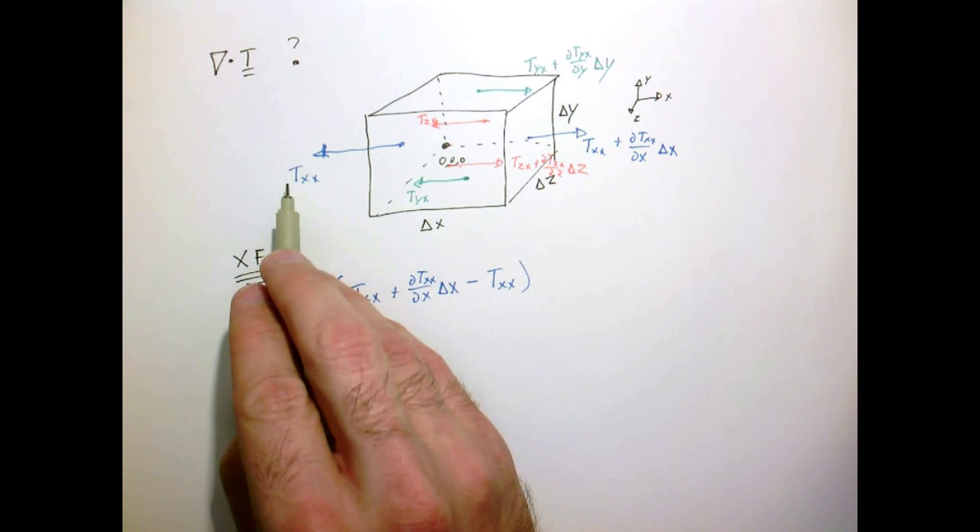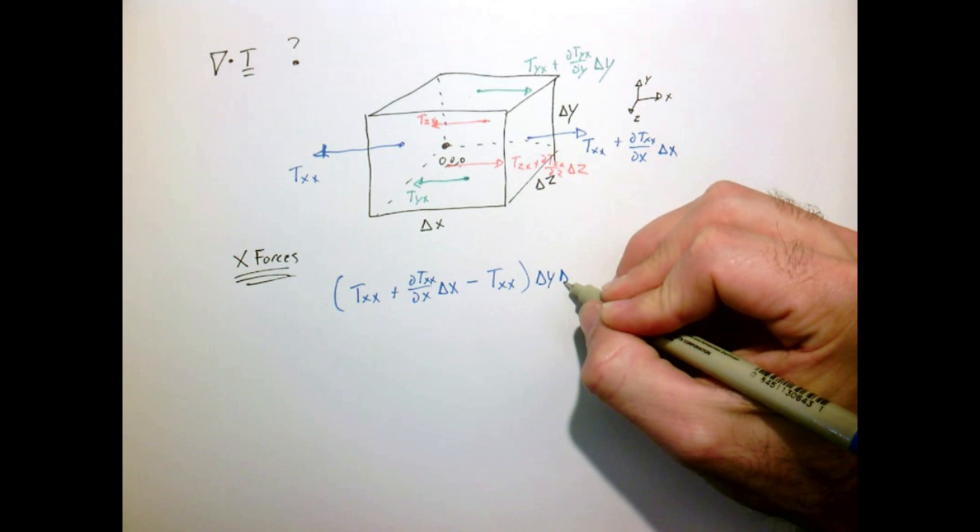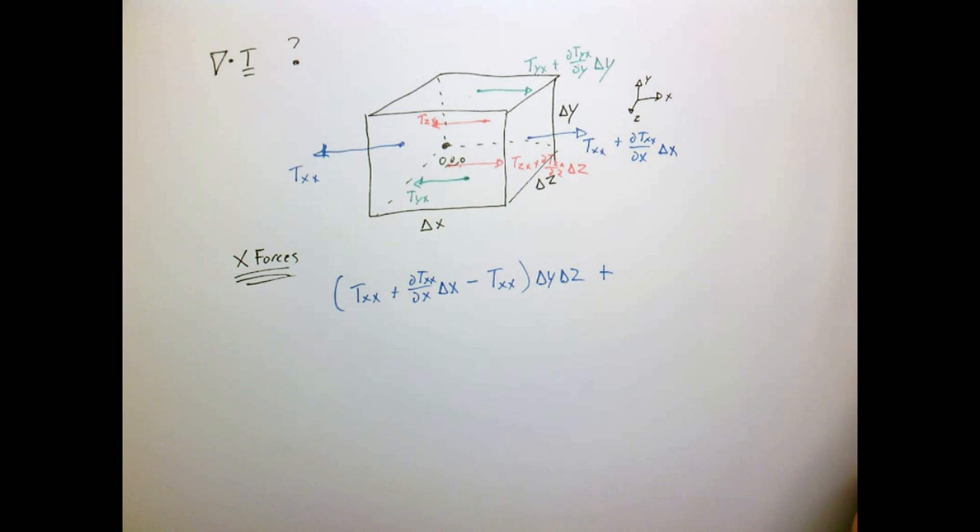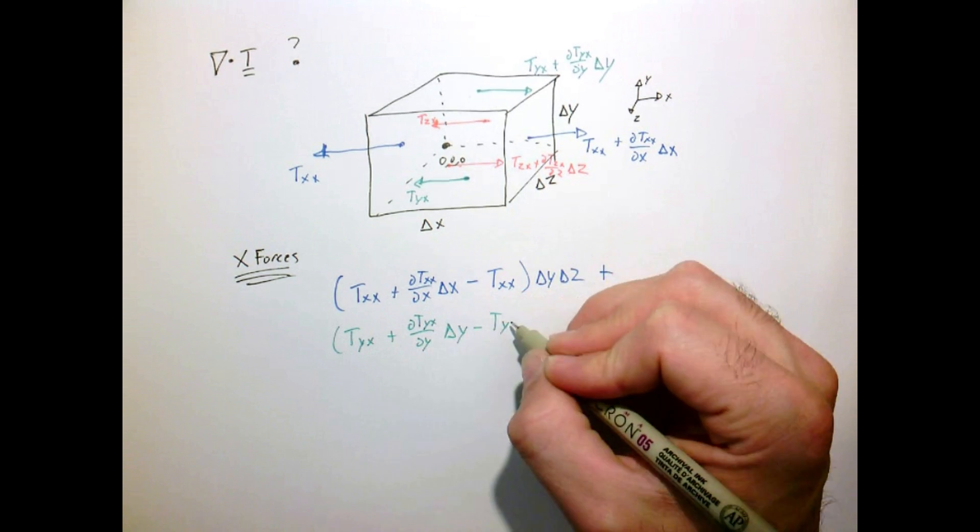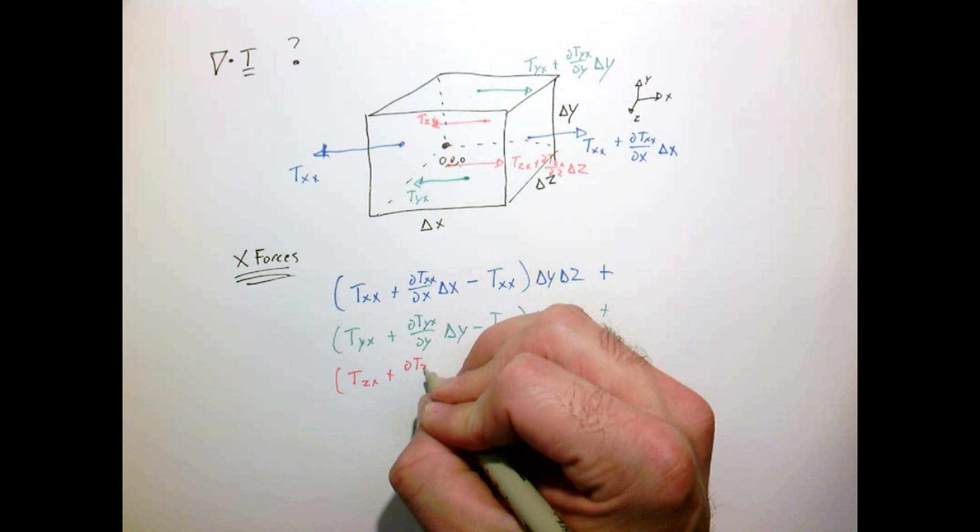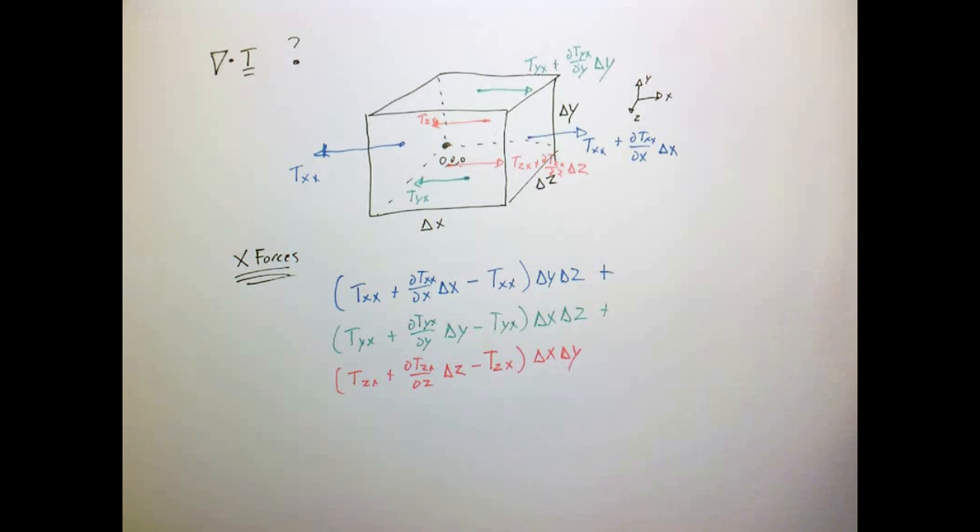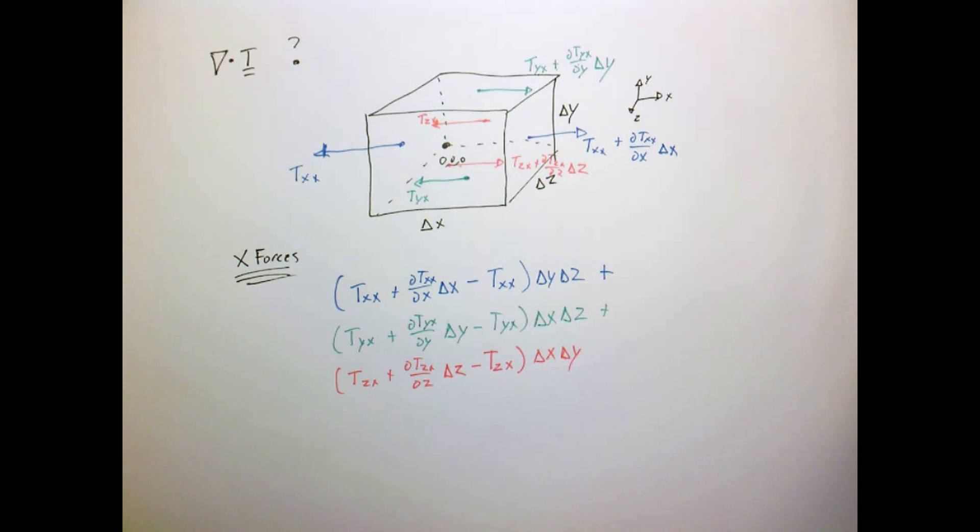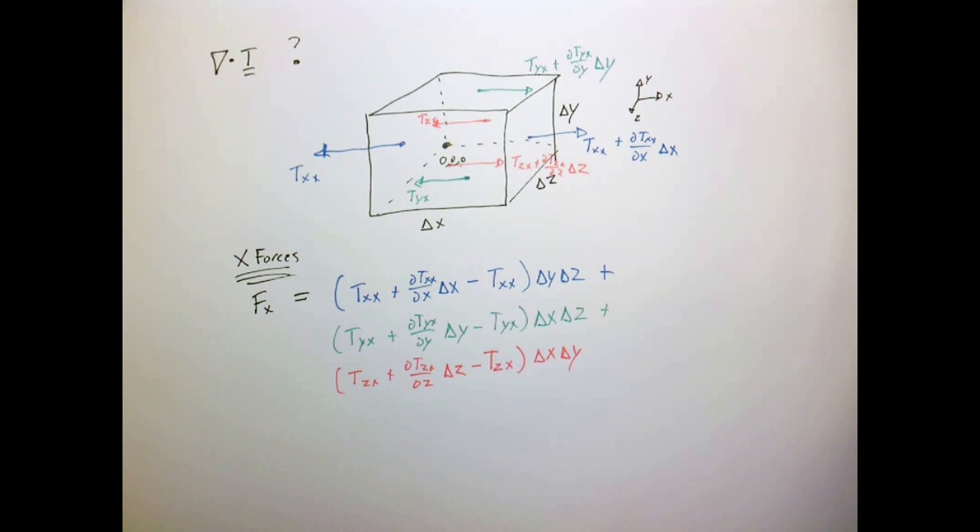And these τ_xx, these are stresses, so in order to get forces, I have to multiply it by delta y and delta z. Now let's add the other ones in. So there is the sum of the forces.